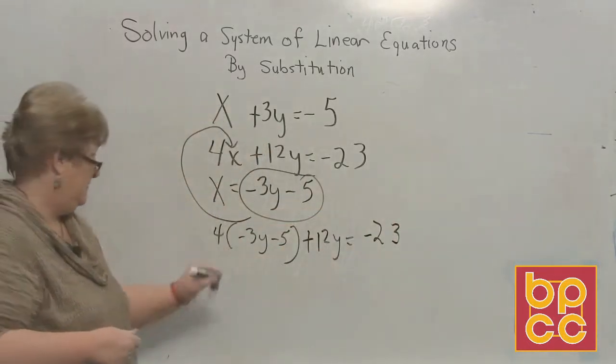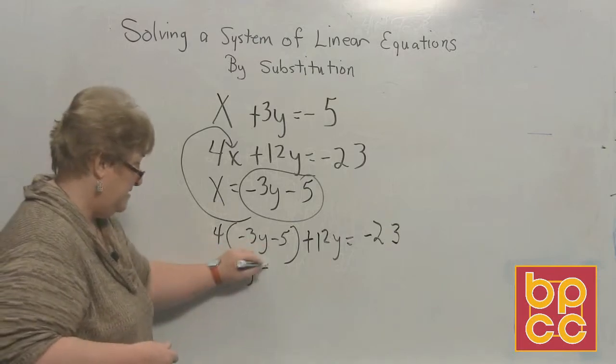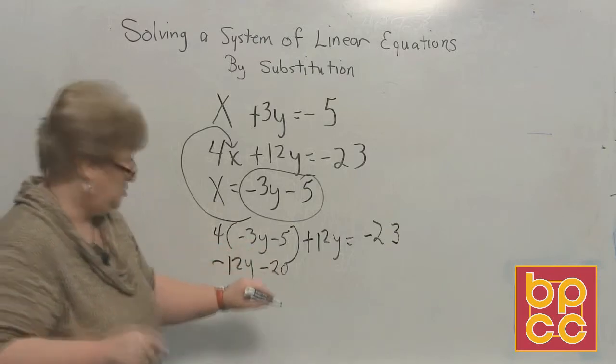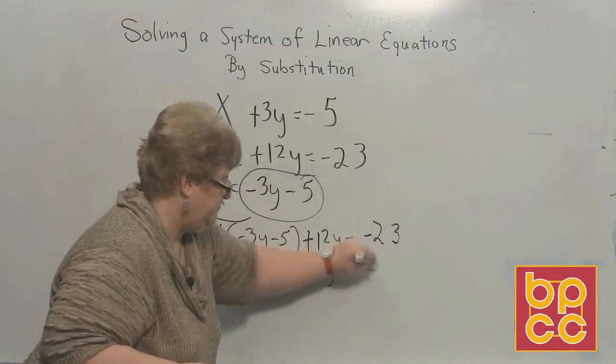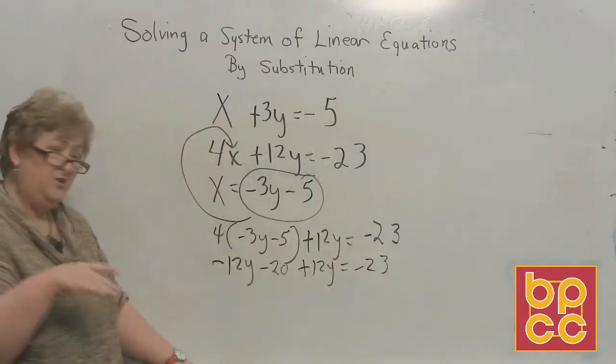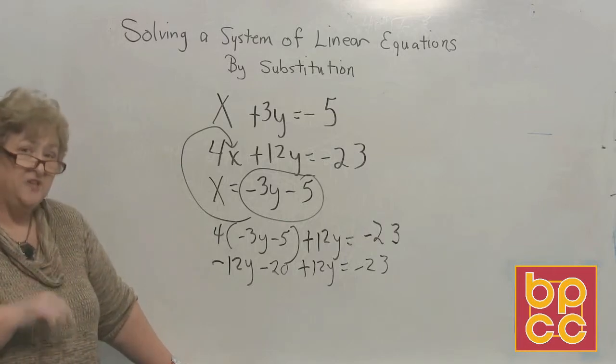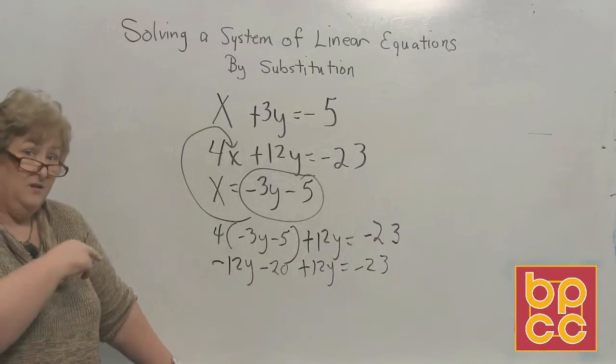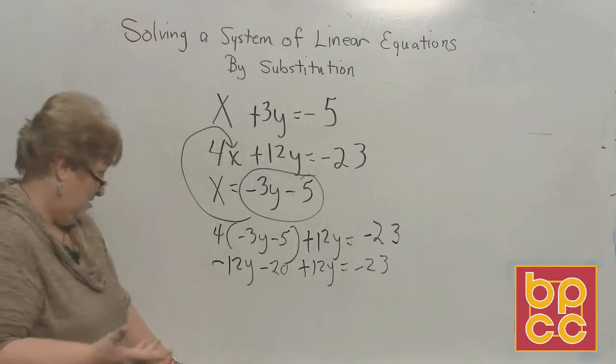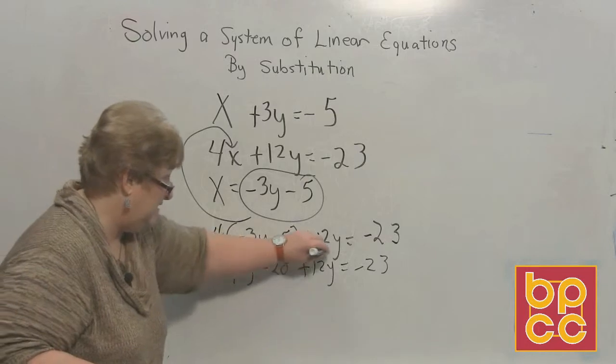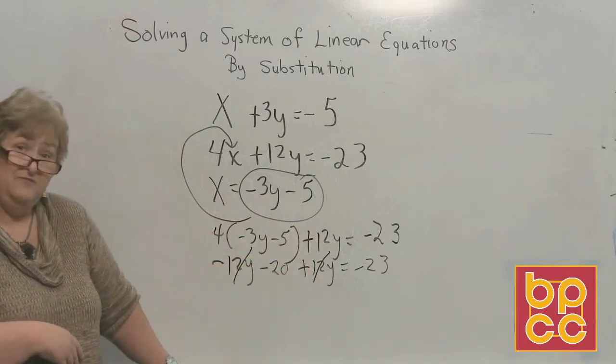Distribution again. Negative 12y minus 20 plus 12y equals a negative 23. Now, do you see anything interesting here? Look at your y's. They're on the same side, and a positive and a negative are on the same side, the same number. They clear out. And now I'm left with a negative 20 equal negative 23.